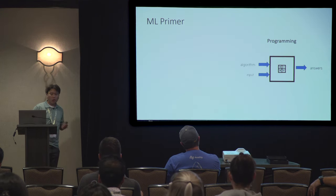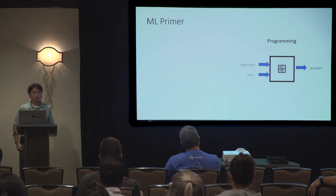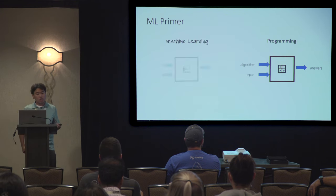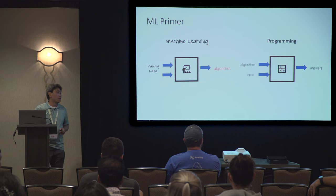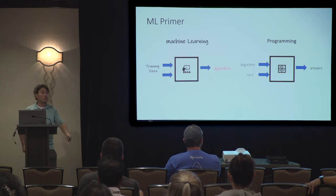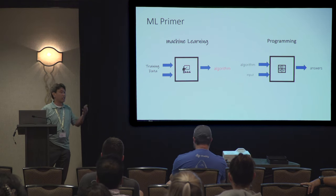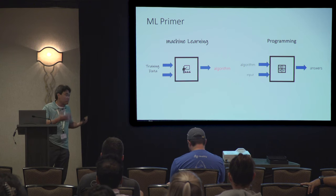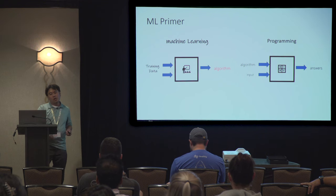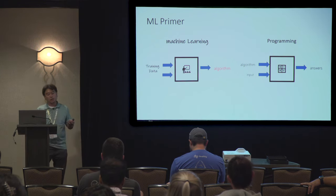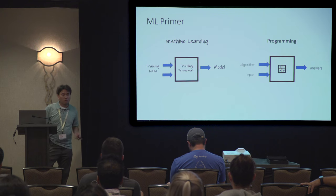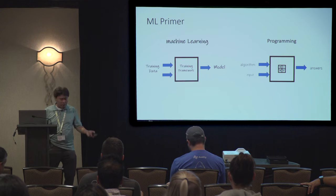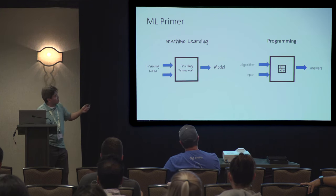As a machine learning primer: programming is on the right side where you have the algorithm, input, and answers. On the left side is machine learning — answers, input, then algorithm. In the machine learning world we call that training data. When you hear about data scientists, they'll ask you, 'Where's your training data?' A lot of it is data cleaning. Correct input and correct answers is the best way to ensure the generated algorithm is valid. Then you use a training framework to build a model for you — that's the output.